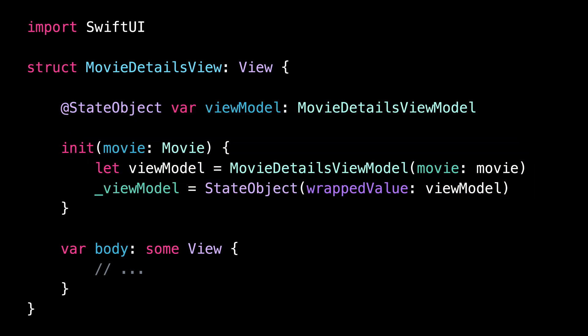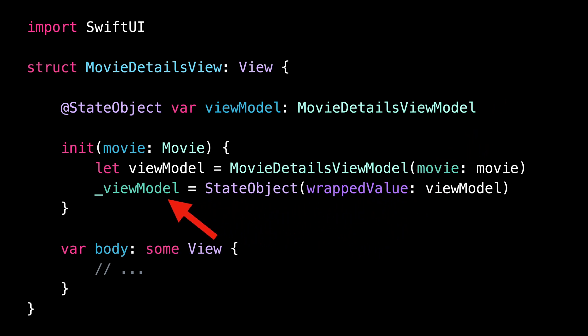To do so, we first create the view model, then we put it in a StateObject wrapper, and finally we assign it to the underlying variable of the property wrapper. And you might have noticed that because we want to avoid long lines of code, we've stored the intermediary result in a local variable.